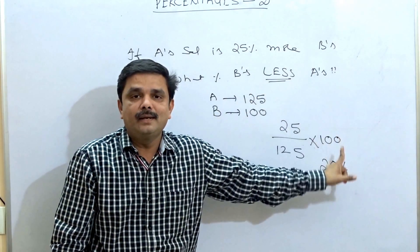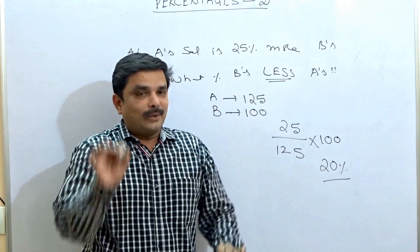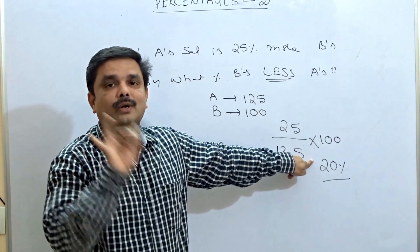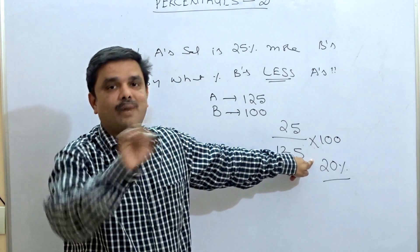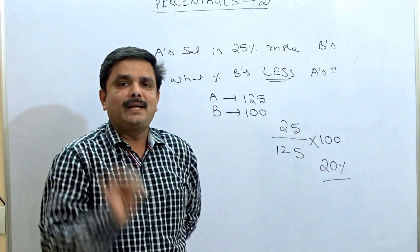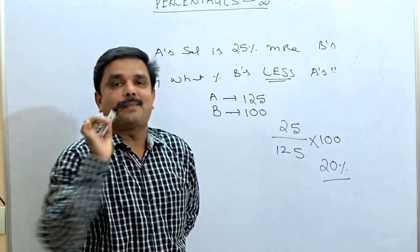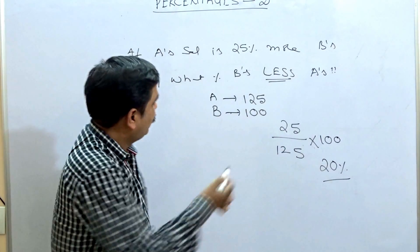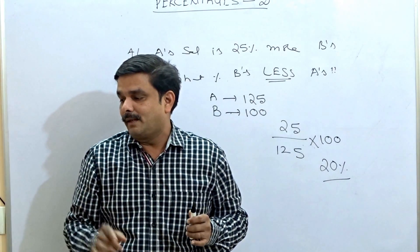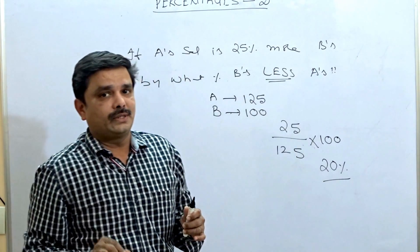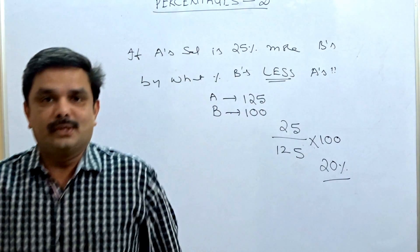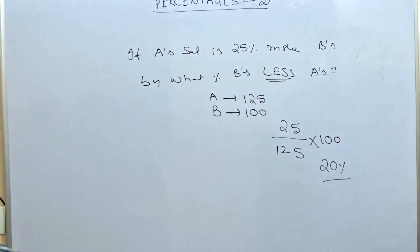So the final answer is: when A's salary is 25% more than B's, B's salary is only 20% less than A's. This is an important finding in percentages. Now let us go for a simple shortcut — a blind method using fractions — for this type of question.